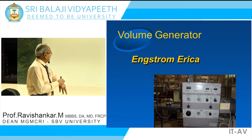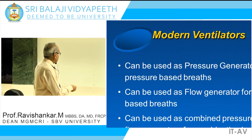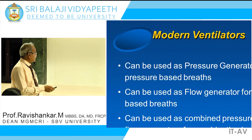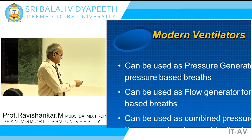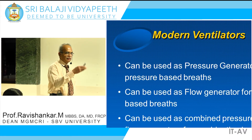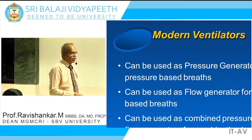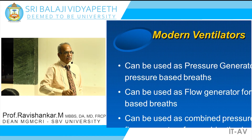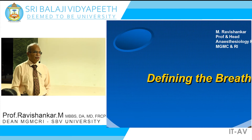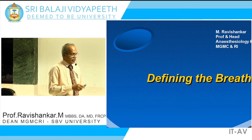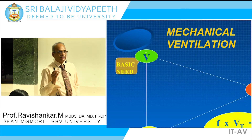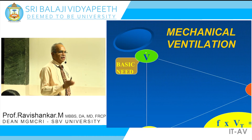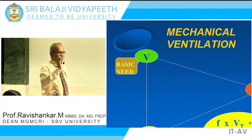Modern ventilators can be used as both a pressure generator for pressure-based modes, as well as a flow generator for volume-based modes, and as a combined pressure and flow generator for combined modes. The basic thing you want during ventilation is to produce an alveolar ventilation of 4 liters — that is what you want. To have satisfactory alveolar ventilation to remove carbon dioxide, so normocarbia can be maintained in the blood, you want a PaCO2 between 35 and 40 mmHg.